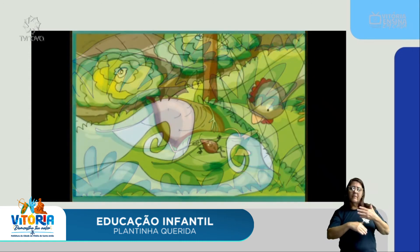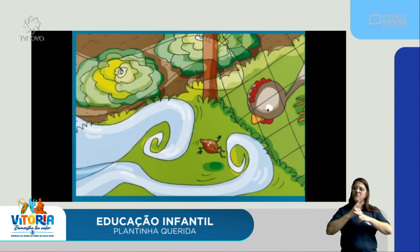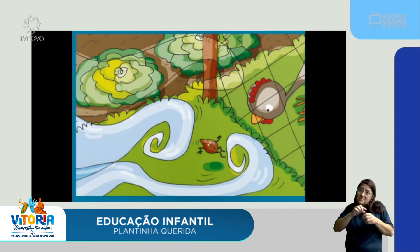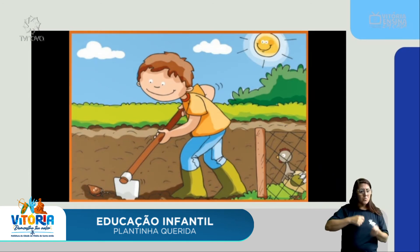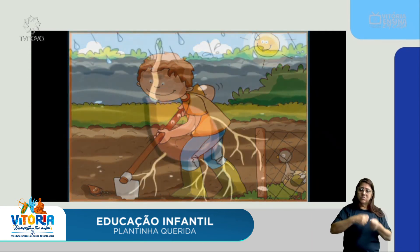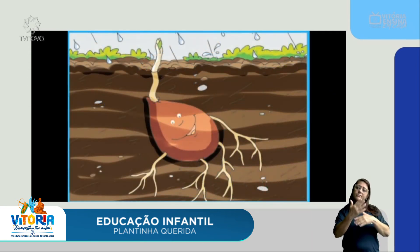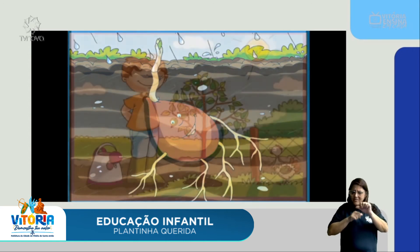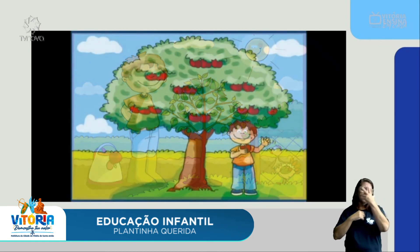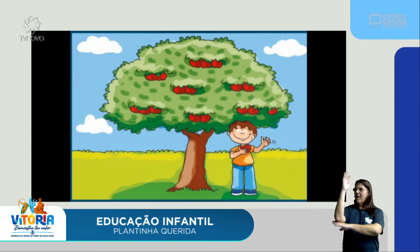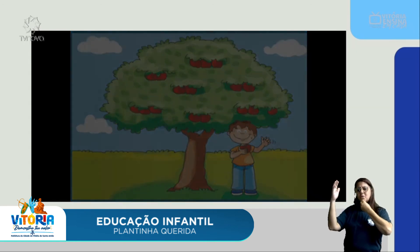O tempo começou a mudar e veio um vento muito forte que assoprou a sementinha para bem longe. Ela foi parar em um quintal de uma fazenda. Um menino se aproximou e com uma enxada começou a remexer a terra fofa, e a sementinha acabou sendo enterrada. Os dias foram se passando e ela percebeu que algo estava acontecendo: o seu corpinho estava se modificando, criando raízes e folhas. Já não era mais uma sementinha abandonada, mas uma planta que crescia lindamente. Com o tempo, tornou-se uma linda e grande árvore, dando saborosas maçãs para o menino e sua família.